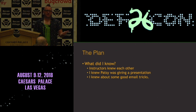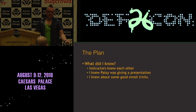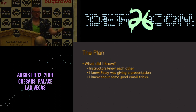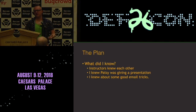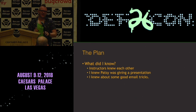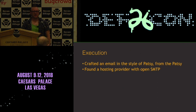The plan. I knew the instructors knew each other — they worked for SANS, I'd seen them talking. I knew they were going to give a presentation, so I went along. There was free beer. And I knew about some interesting email tricks. I guarantee almost everyone in this room, when they were 10 or 11, in the 90s, found an open mail relay on the internet and sent an email to their friends as billgates@microsoft.com saying 'Hey, there's a new update to Windows, please click on this link.' So, the execution. From a high level, I crafted an email in the style of the Patsy and sent it from the Patsy. I found a hosting provider with open SMTP. That's about it.